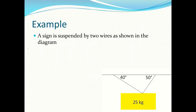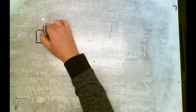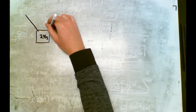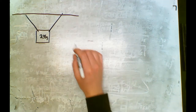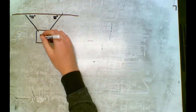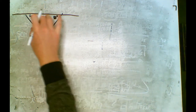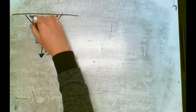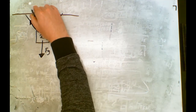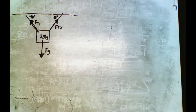Let's do an example. A sign is suspended by two wires as shown. Draw a free body diagram. I'll draw the sign — it's 25 kilograms, with one cable going one way and another cable the other way, at 40 degrees and 50 degrees. For the free body diagram: we have force of gravity downward, force of tension 1 and force of tension 2 along the cables, since tension can only go in the direction of the cable.